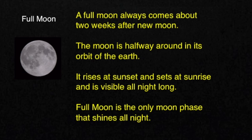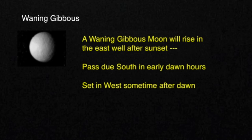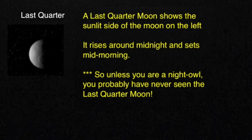Next, the moon begins to wane or shrink in size as it appears to us. A waning gibbous moon will rise in the east well after sunset, pass due south in the early dawn hours, and set in the west sometimes after dawn. The moon continues to shrink until it reaches last quarter. A last quarter moon shows the sunlit side on the left. It rises around midnight and sets mid-morning. So unless you're a night owl, you probably have never seen the last quarter moon.